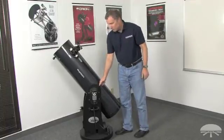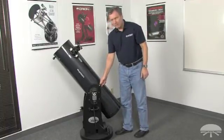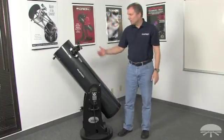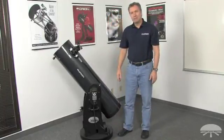Slides in, and then you secure the tube with a single hand knob. Now the telescope is fully assembled, and we'll look at how to operate the telescope next.